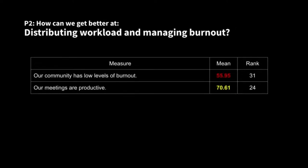Moving on to ponderable number two: how can we get better at distributing workload and managing burnout? Our meetings are productive — the mean was 70, decent but needs improvement. Our community has low levels of burnout — this was the lowest scoring item on the survey with a mean of 55. So we're productive but have lots of burnout. Something to ponder.